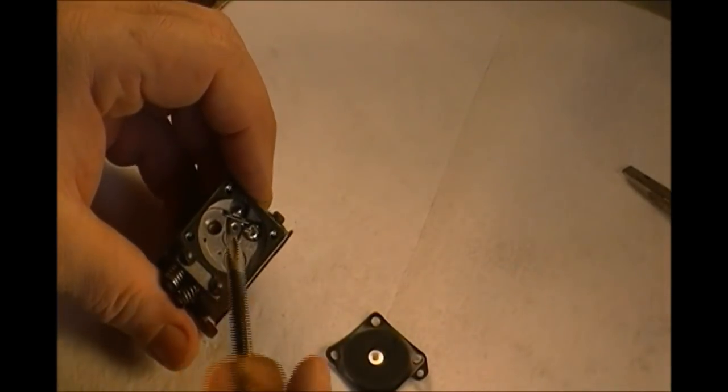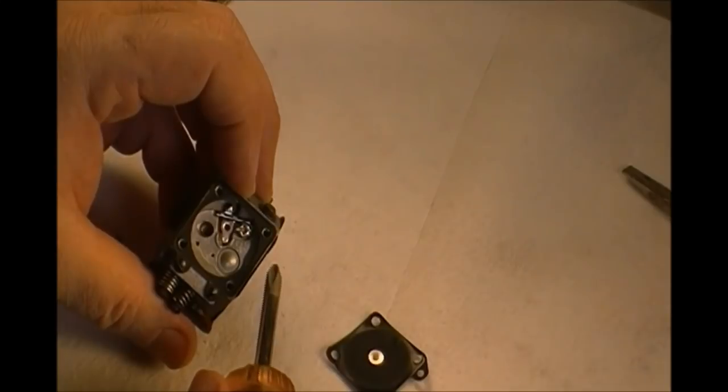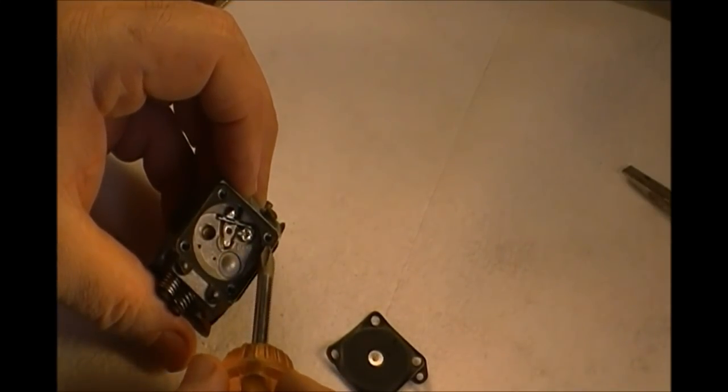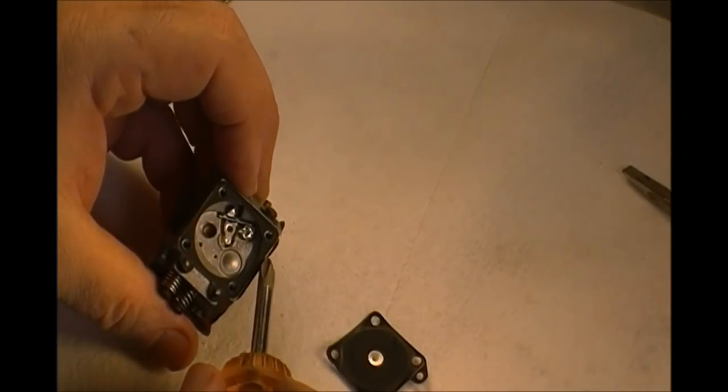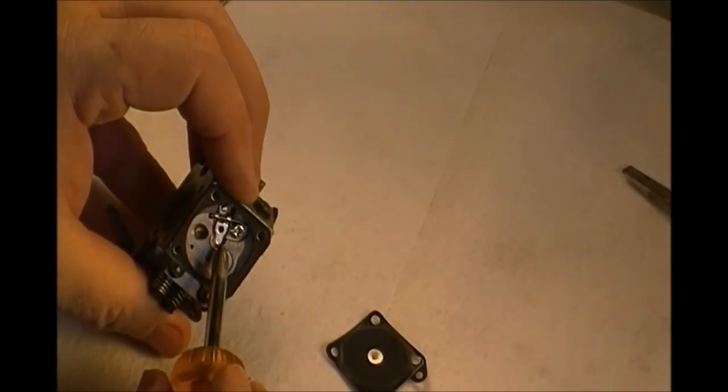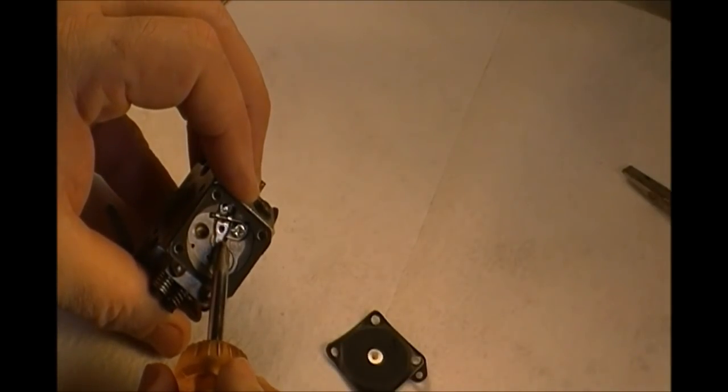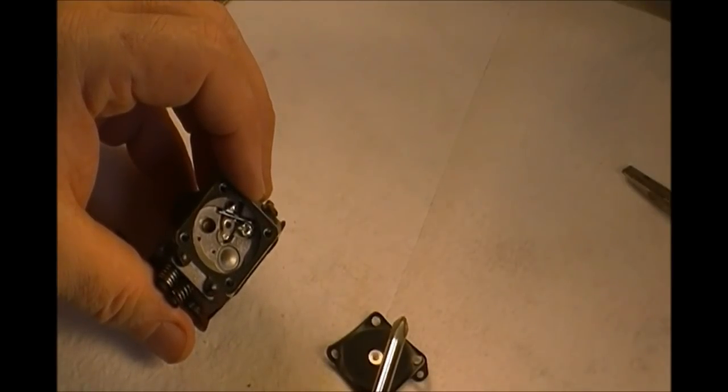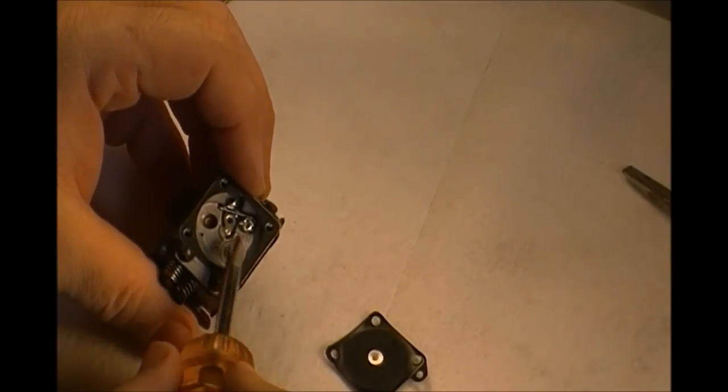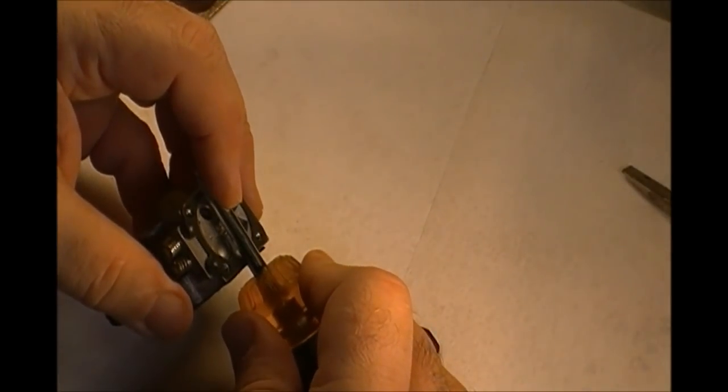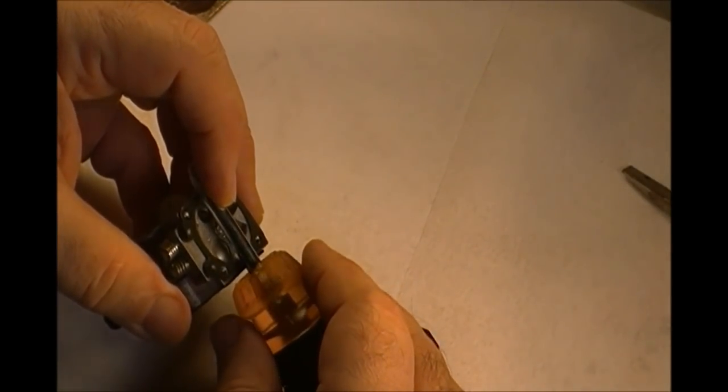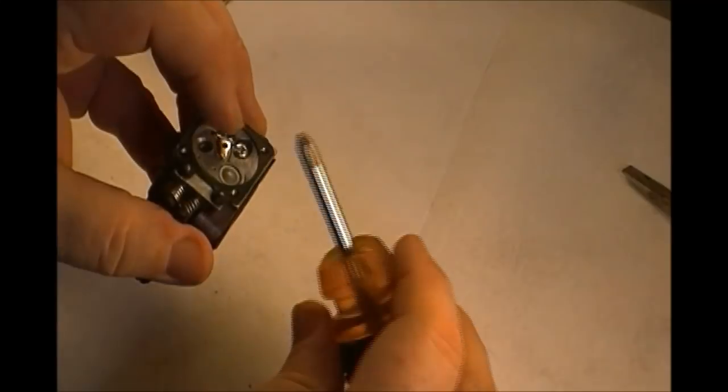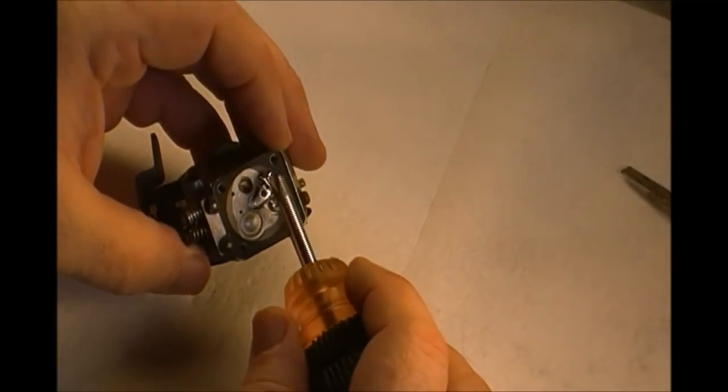Now before I take this off, I want to tell you ahead of time that once this gasket is off, you lay a straight edge across here. This piece right here is supposed to be between 60 and 70 thousandths gap. If I lay a straight edge across there, with the gasket off of it, there's supposed to be a 60 to 70 thousandths gap.